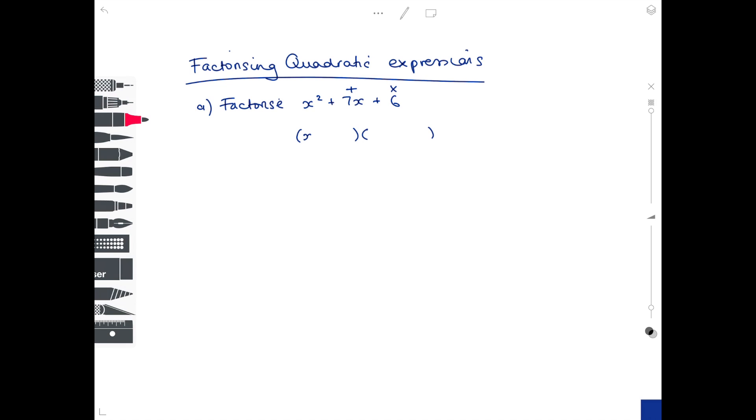We're going to start by writing x at the start of each bracket. Now what numbers add together to make 7? Well, 4 and 3. Although 4 and 3 add together to make 7, which is good, when you multiply them together they make 12, which is bad because we're looking for 6.